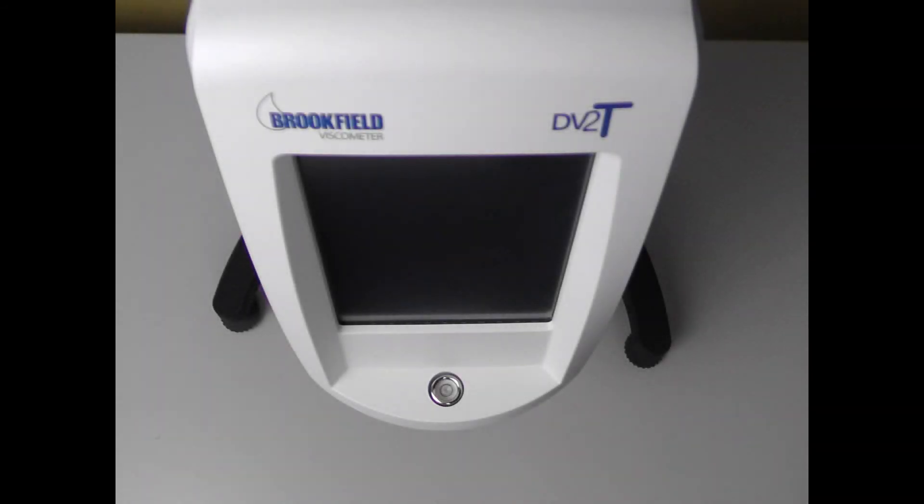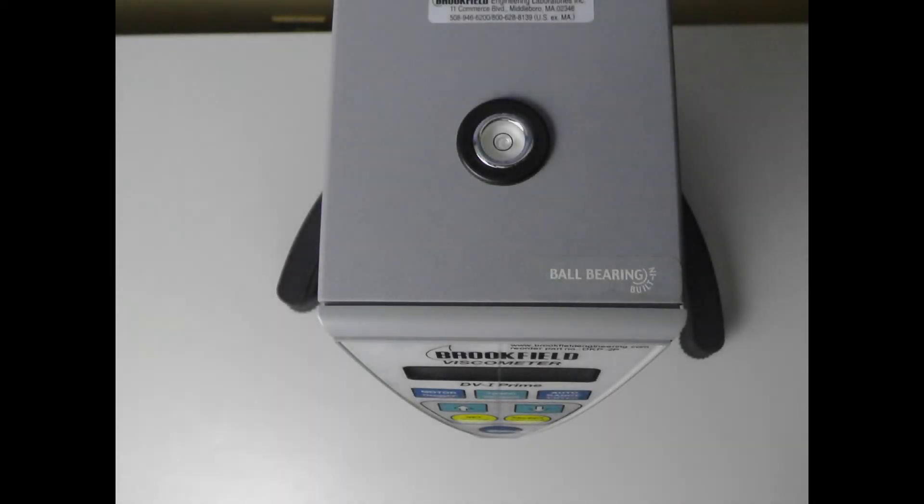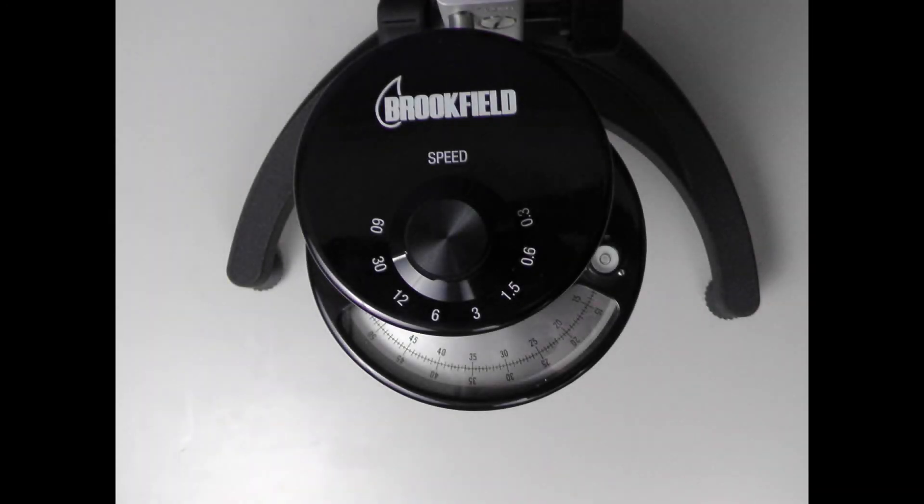On our DV2T and DV3T units, the bubble level is located on the bottom center of the viscometer below the touch screen. On our other digital viscometers, the bubble level is located on top of the instrument head. On our analog units, it is located next to the dial housing.